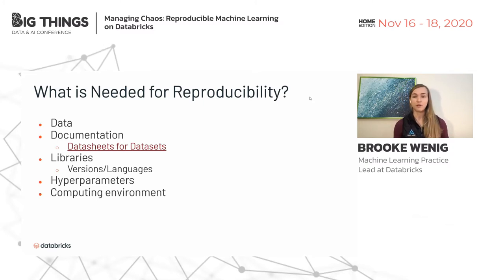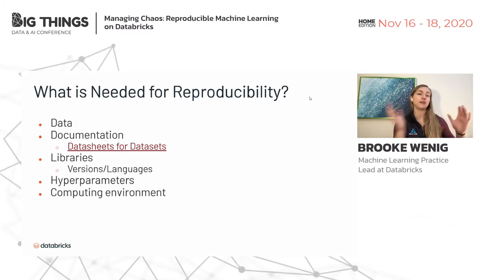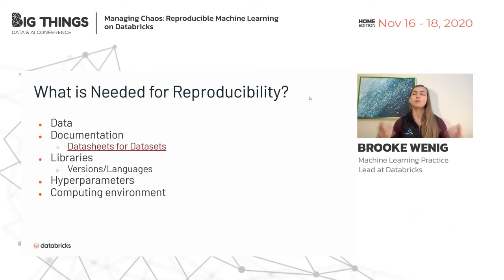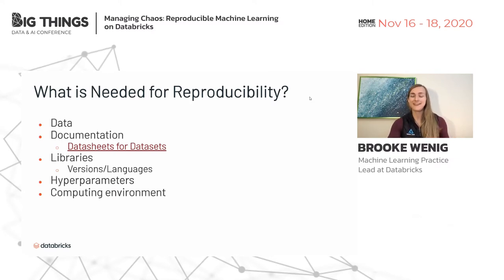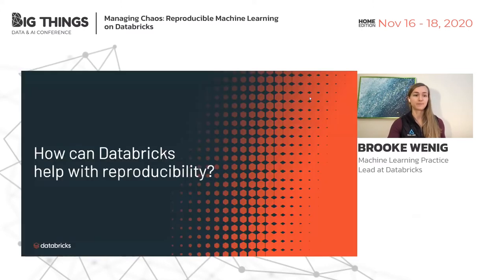Lastly, the computing environment. You could get different results using CPU versus GPU, especially with different floating point precisions. Furthermore, if you develop something on AWS and want to port it to Azure, they have different instance types and different default libraries installed. All of this is needed for reproducibility. So now let's talk about how you can do this on Databricks.